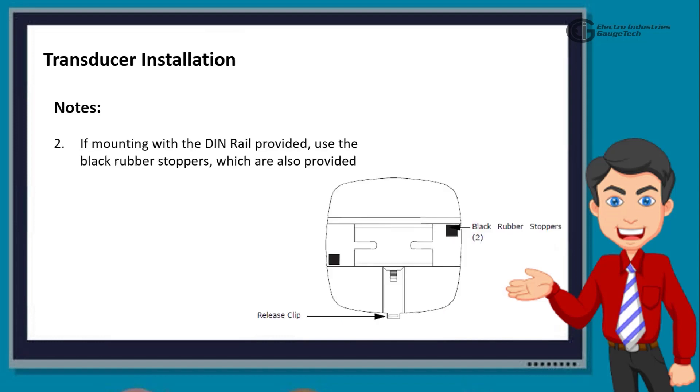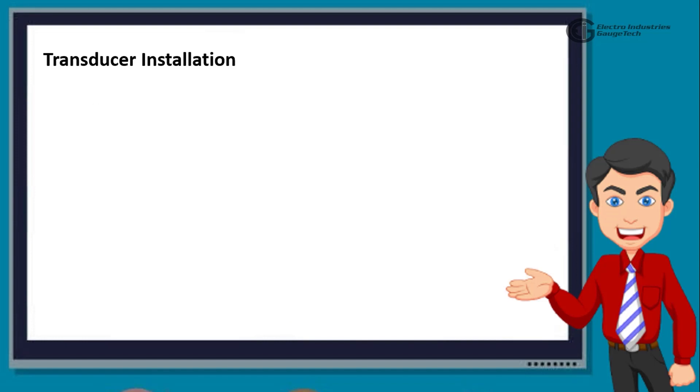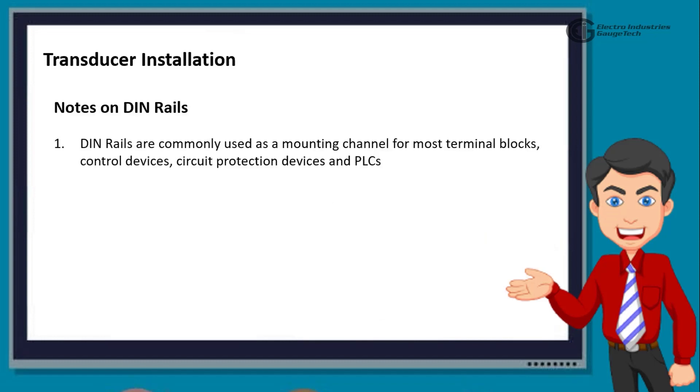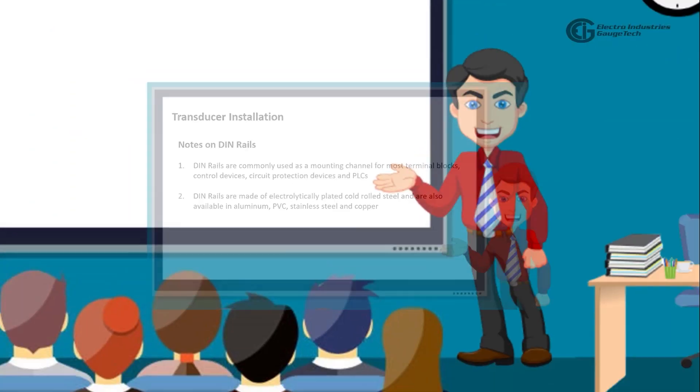If mounting with the DIN rail provided, use the black rubber stoppers, which are also provided as shown in this diagram here. Also, regarding the DIN rails, it must be noted that DIN rails are commonly used as a mounting channel for most terminal blocks, control devices, circuit protection devices, and PLCs. The DIN rails are made of electrolytically plated cold rolled steel, and are also available in aluminum, PVC, stainless steel, and copper. So, this covers pretty much everything in the mechanical installation.